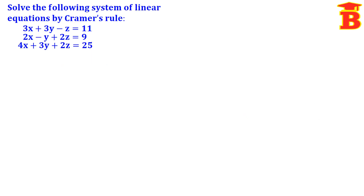Next problem: solve the following system of linear equations by Cramer's Rule. Here three equations are given in terms of the variables x, y, z. All the constants are already on the right hand side, so we can proceed directly.